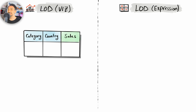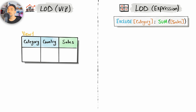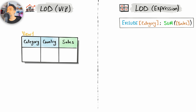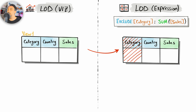In the visualizations we're going to have exactly the same view with the two dimensions category and country. Now in the LOD expressions we're going to use the EXCLUDE, where we're going to have EXCLUDE category, sum of sales. What we are telling Tableau is to go and exclude the dimension category from the visualization, so the LOD expression will have all dimensions from the view minus category — meaning country is going to control the level of detail.